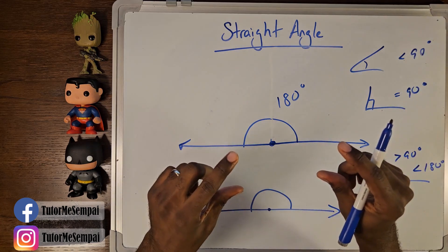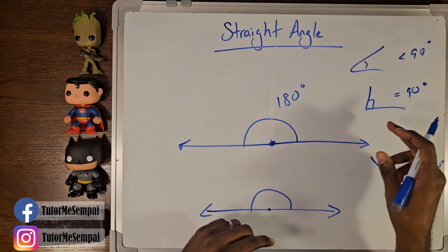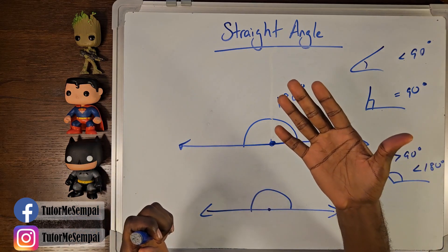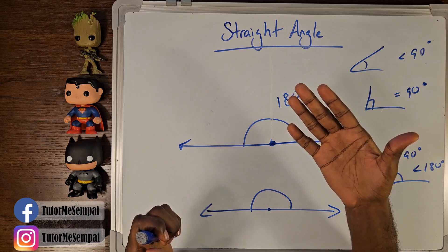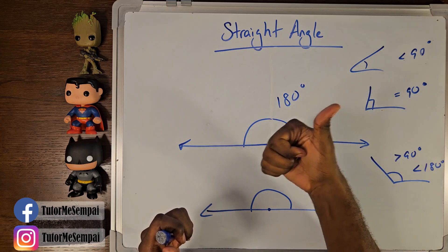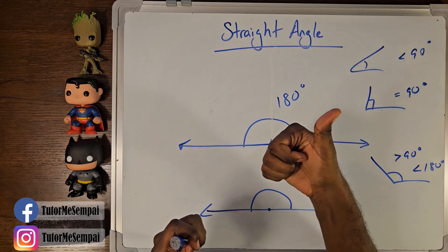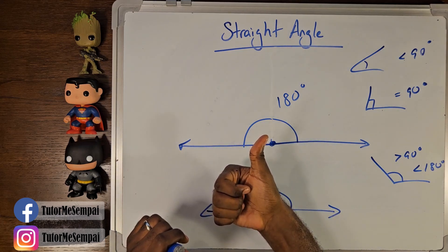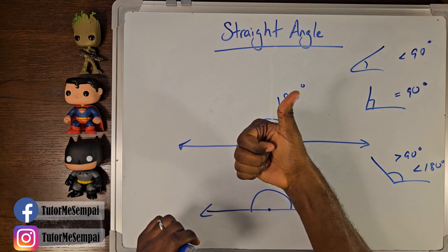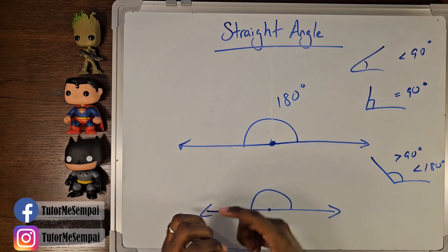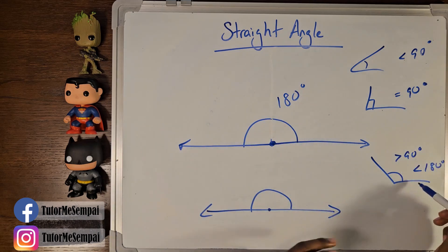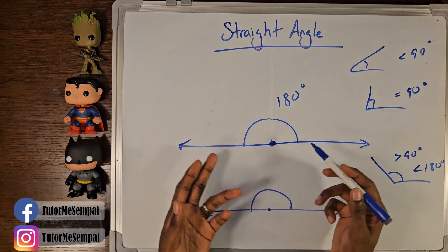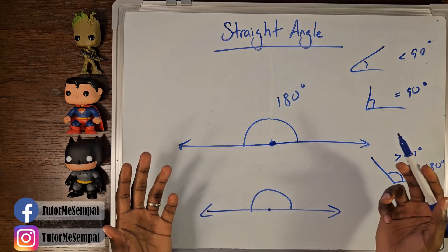Remember: acutes are small and cute; for right, think of a thumbs-up — you're putting your thumb up saying 'you got that right,' making that right angle shape; obtuse is not acute or right; and straight is just like the name says, a straight angle. Let's jump into two more that are not going to be as common, but you should still know them.